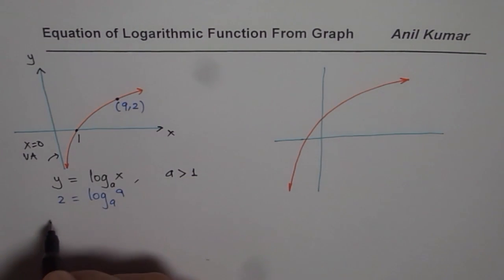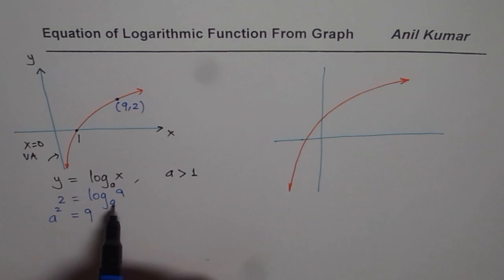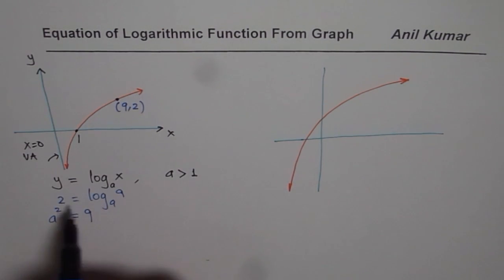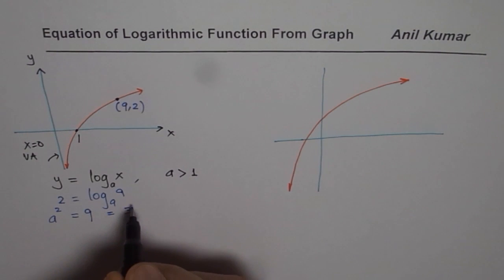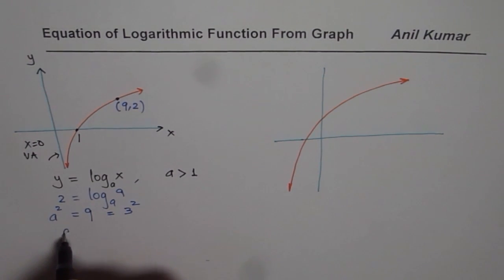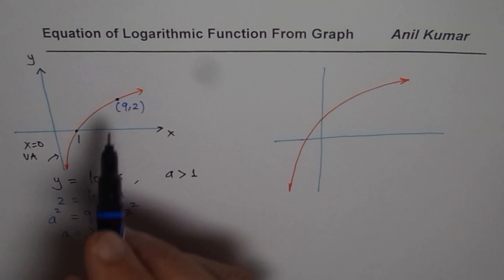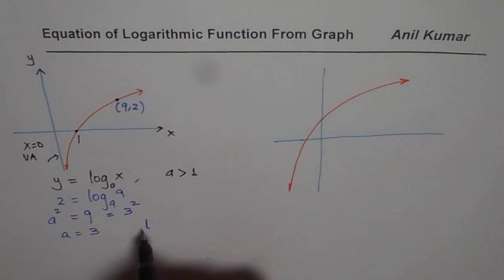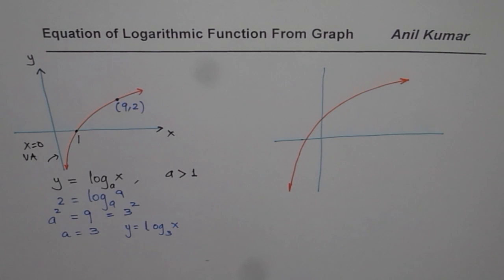This can be solved by converting to exponential form: a squared equals 9. I can write 9 as 3 squared. Comparing these two, a equals 3. Therefore, the function drawn here is a logarithmic function whose equation is y equals to log to the base 3 of x. And this passes through the point (9, 2).